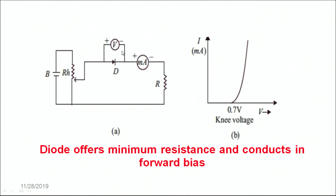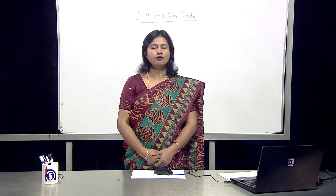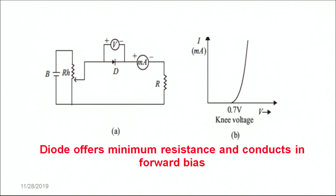To measure the voltage we have a voltmeter connected in parallel and an ammeter connected in series with the circuit. In forward bias the diode offers minimum resistance, and therefore as soon as the knee voltage is attained the diode shows a sharp increase as the voltage is increased. Once the knee voltage is attained, the diode increases the current as the voltage increases.